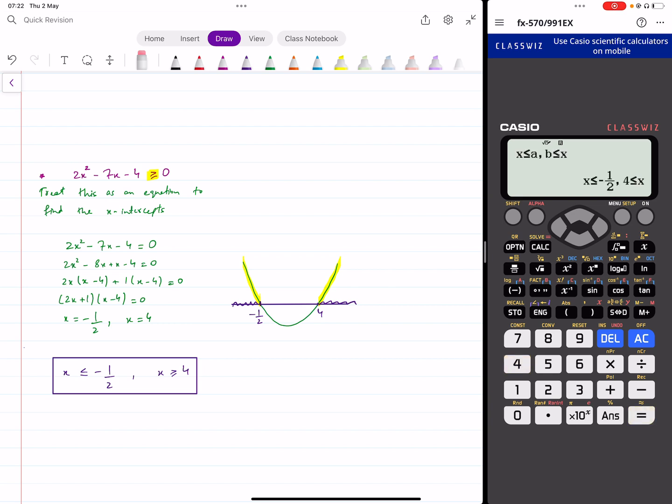Press the equal button now. And you get these two results. x less than or equal to minus 1 over 2. Or x is greater than or equal to 4. You get those answers here directly.